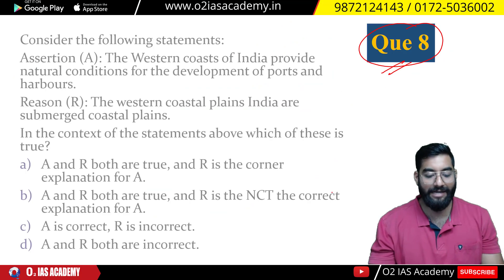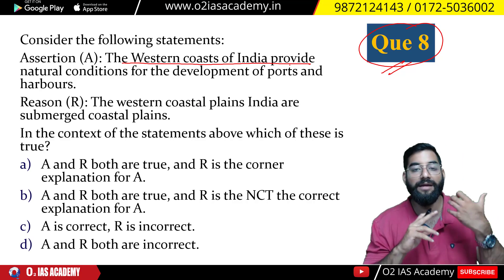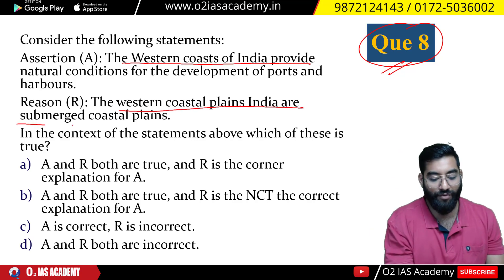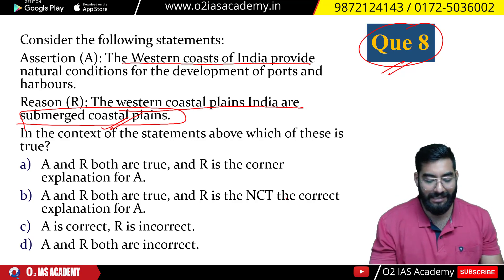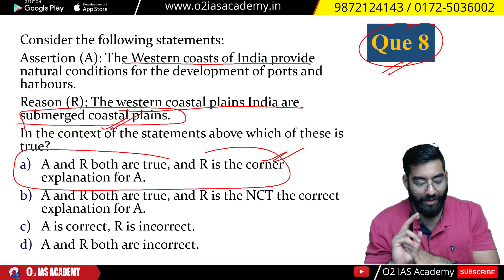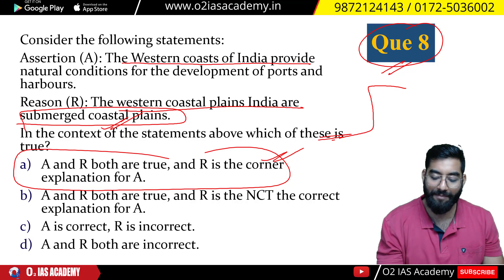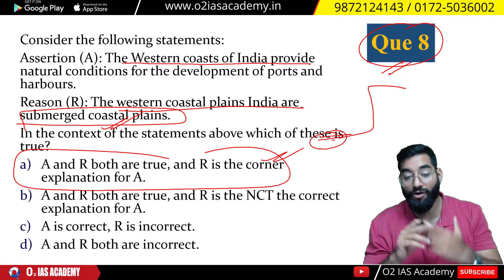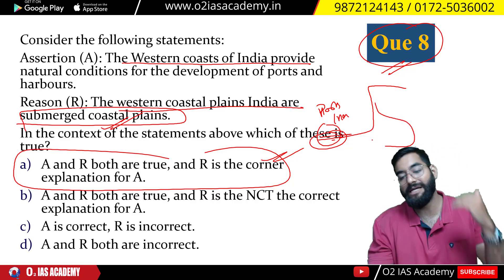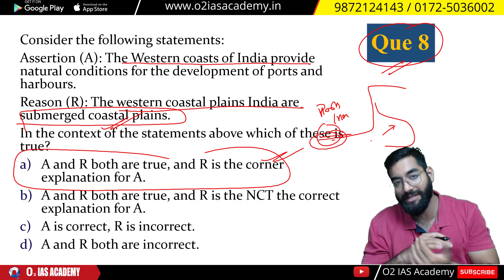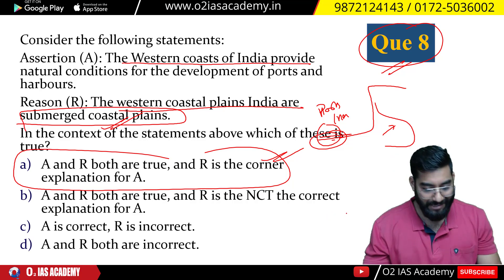Question number 8: The western coast of India provides very good conditions for natural harbors and port development. The answer is both statements are true and the reason is the correct explanation. The western coastal plains are a submerged coast — because of that, the sea level is much deeper and there are not too many sediments, so you get good ports and harbors there. There are also inlets of the sea going inward, which helps in port development. Examples include Mumbai Port and Jawaharlal Nehru Port.